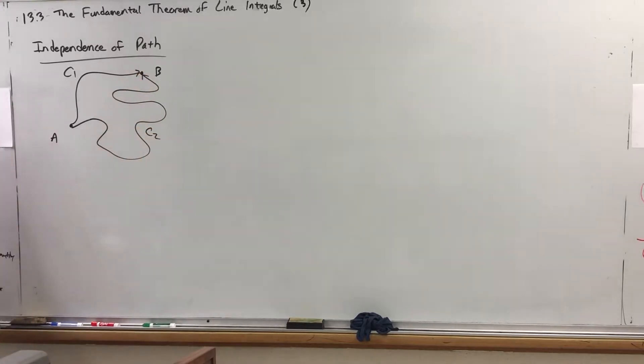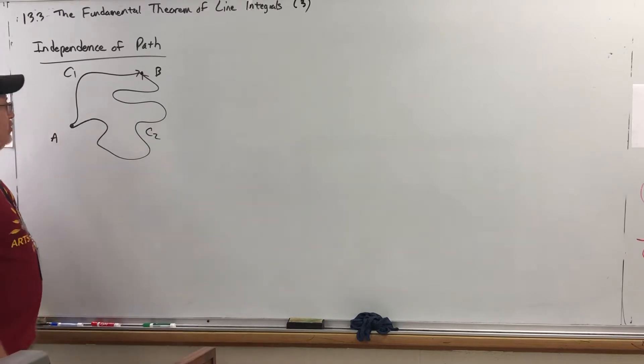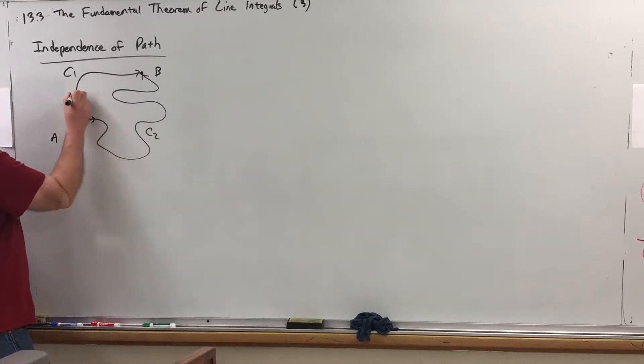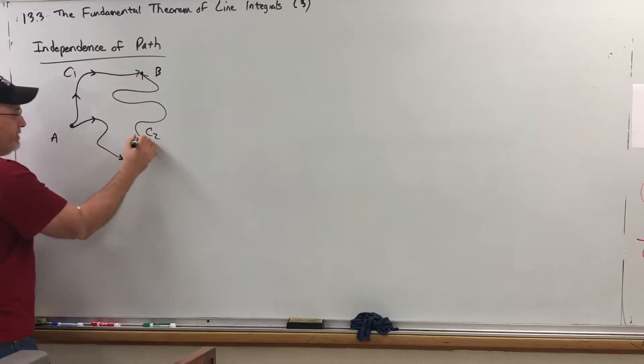Now, we're going to make sure these paths don't cross each other. We'll talk more about that in future videos. Independence of path means that when we evaluate the line integral, it does not matter which path we take. It doesn't matter if it's one of these two paths or any other path that gets from A to B. Let me draw some arrows indicating the orientation of these paths.